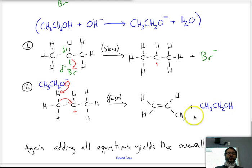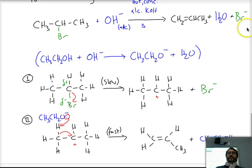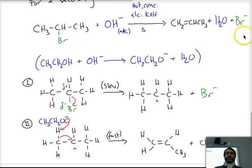So 1-bromopropane and 2-bromopropane give you the same product. When you add all of this together, you get the same overall equation. The ethanols cancel out, the ethoxides cancel out, and so we see that the overall equation would have the hydroxide and the water that are there. So I hope with this you understand E1 and E2 elimination reactions reasonably well. I'll see you next time.